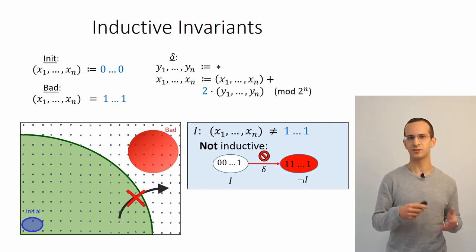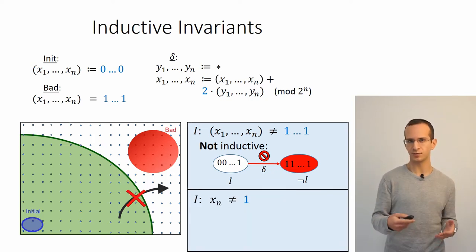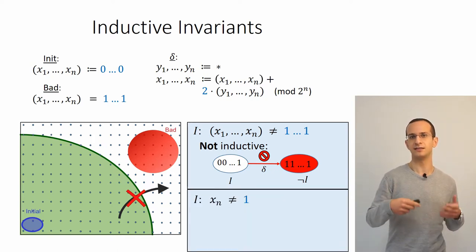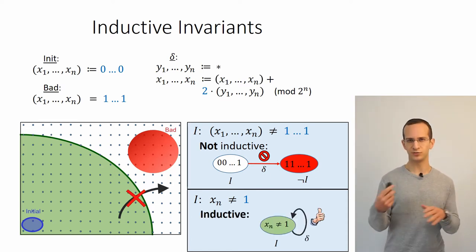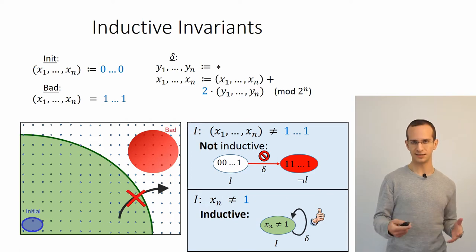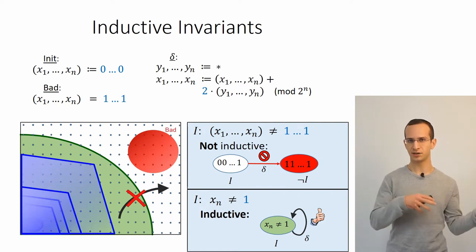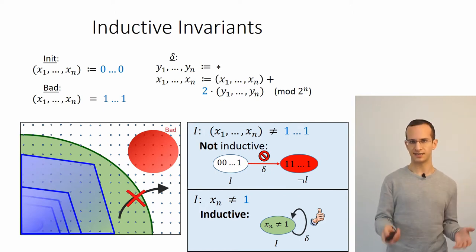For example, the property that not all the bits are one of course holds, but it's not an inductive invariant because there is a transition from a state where not all bits are one to the state where all bits are one. But we can strengthen this property to say that the least significant bit is not one, and this is an inductive invariant. Once you have this inductive invariant, it over-approximates the set of reachable states and separates it from the set of bad states, establishing safety.